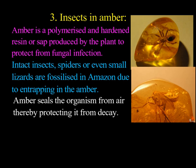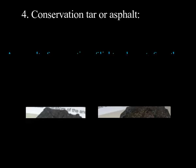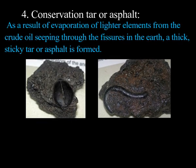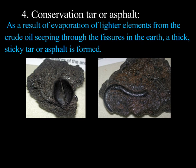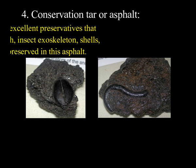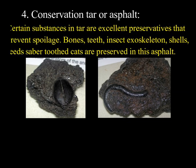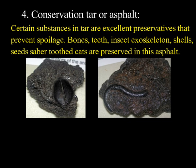Conservation in tar or asphalt is formed as a result of evaporation of lighter elements from crude oil seeping through fissures in the earth. Asphalt is a thick, sticky substance that forms. Certain substances in tar are excellent preservatives that prevent the spoilage or decay of organisms. Bones, teeth, insect exoskeletons, shells, seeds, and saber-toothed cats are among the organisms preserved in asphalt.